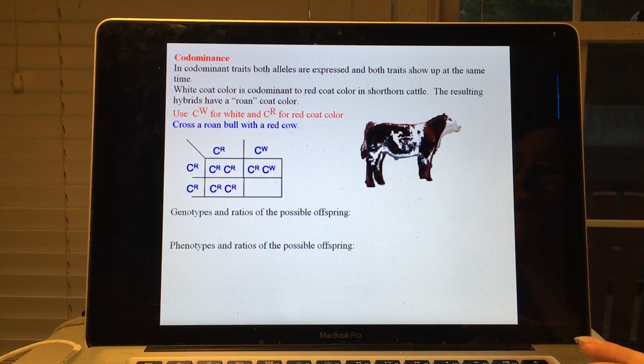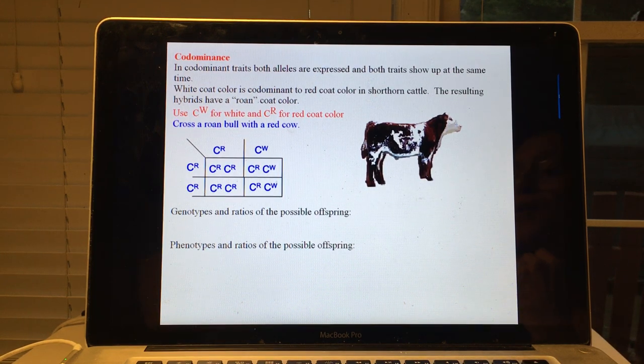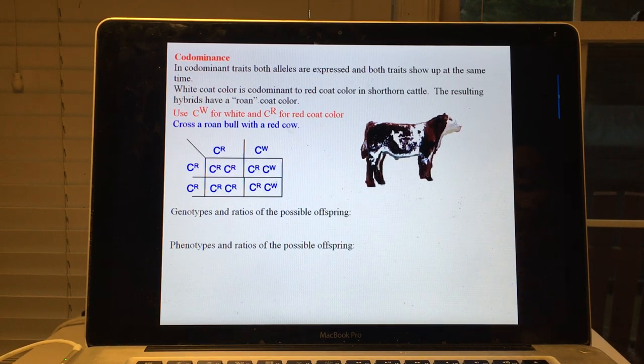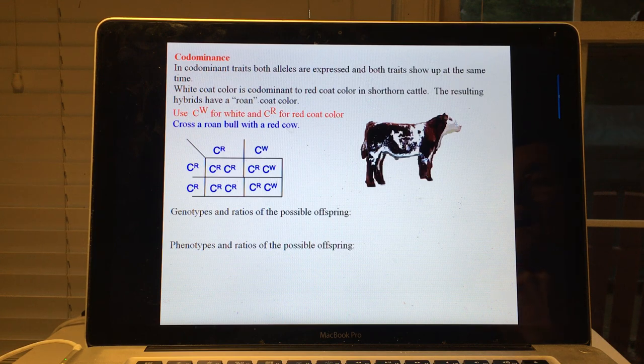But with the roan cattle, with codominance, you use an uppercase letter for both alleles and then a superscript with two different letters. So the R stands for red and the W stands for white. And by the way, it should be noted that this is obviously not a bright red color that you're used to, but kind of an auburn color, a brownish red.